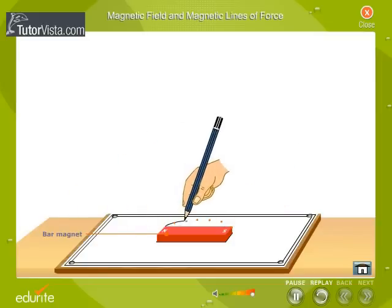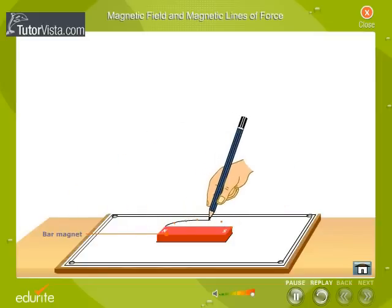Join the points. These points form a curve. The curved line represents a magnetic line of force.